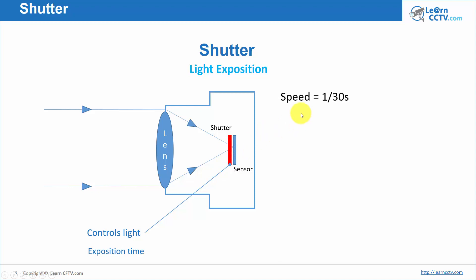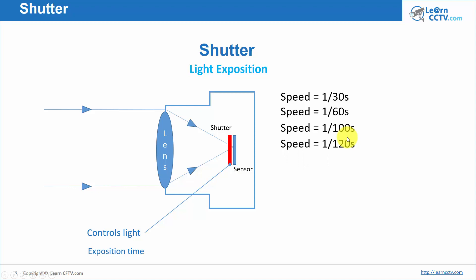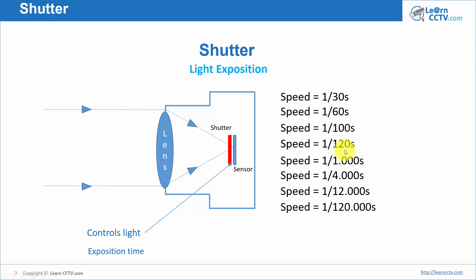When you control shutter speed, you control the exposure to light — how long the light reaches the sensor. For example, the light might hit the sensor for 1/30 of a second, or 1/60, or 1/100, and you keep going: 1/1000, 1/4000, 1/12000. At 1/30 it's pretty slow; at 1/12000 it's very fast — the light hits the sensor for just a tiny fraction of a second.